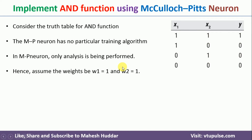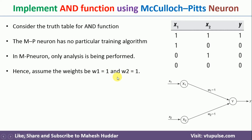First, we will assume w1 equals 1 and w2 equals 1, and then we will check whether we are able to implement the AND function with the MP Neuron. Otherwise, we will try to modify the weights.